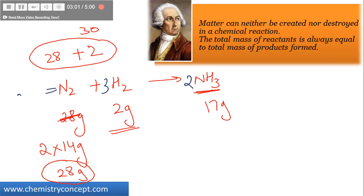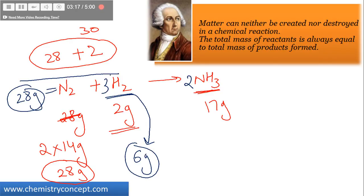Now you can see that the mass of nitrogen is 28 grams on the reactant side. Mass of hydrogen is now 6 grams, collectively 34 grams.